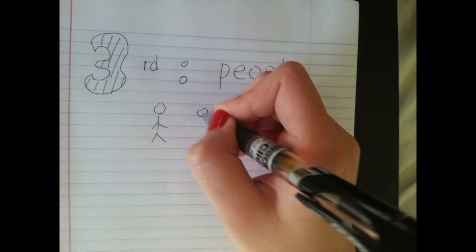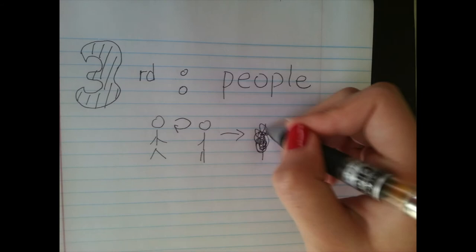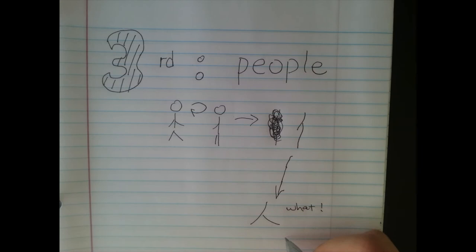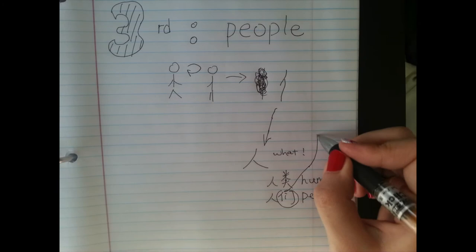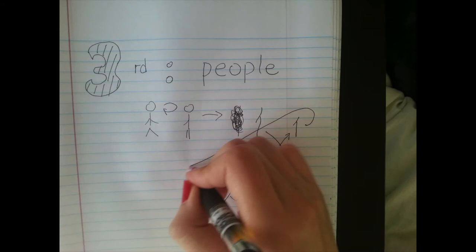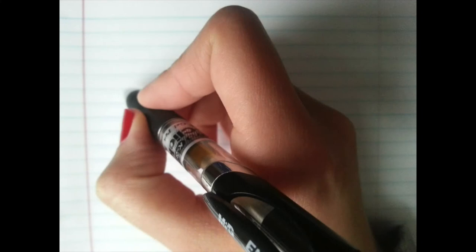And now let's talk about the character for people. You draw a stickman like a person, and you turn it, turn it — and then it makes the Chinese character for people. Nowadays we write it like this. And it makes words like human, like the word people. It can also be a prefix, and it makes characters which mean servant, people, human body, and occupation.